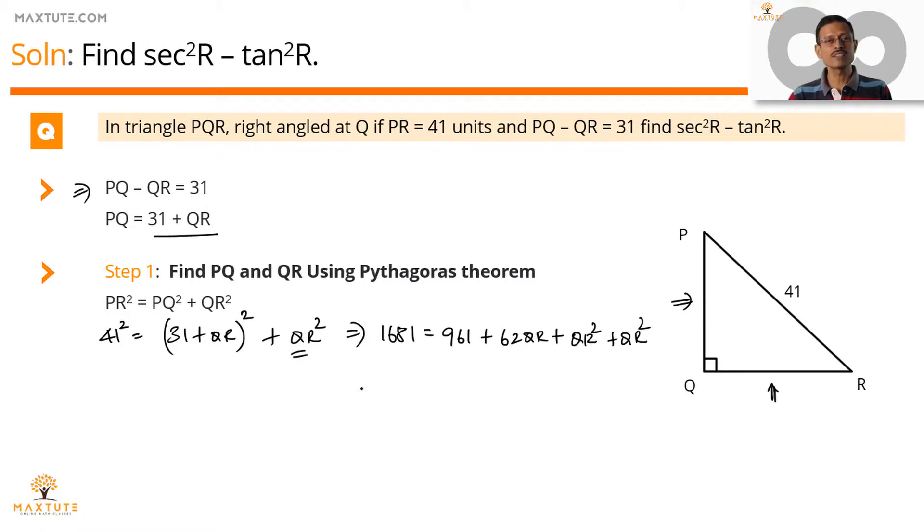What we'll do in the next step is club like terms and take all of them to one side. So QR square plus QR square will make it 2QR square plus 62 QR, 961 minus 1681 will be minus 720 equals 0.